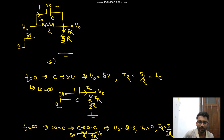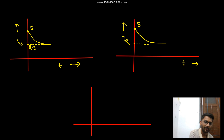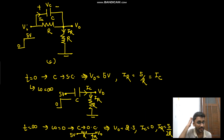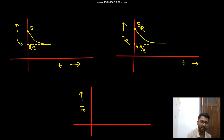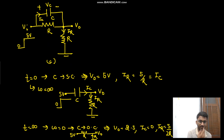For ir, it goes from 5/R down to 2.5/R. For ic, initially it was 5/R and then it decays to zero.